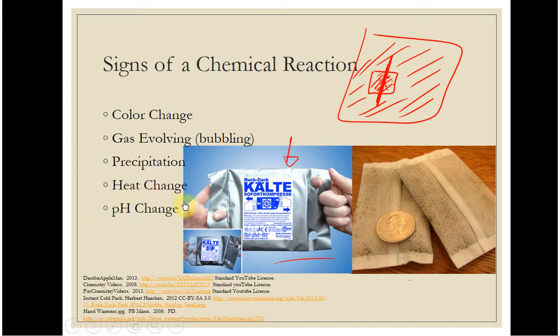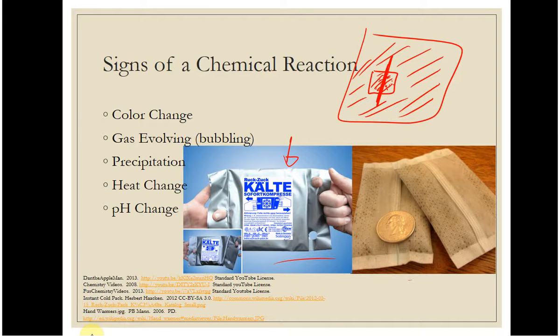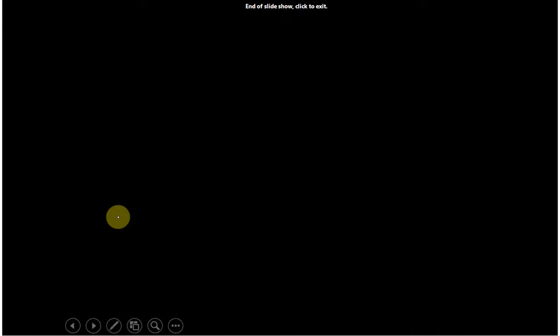The last thing is a change in pH. Now a change of pH just is when you have something that was very acidic and then it's not. Think about, you know, if you have acid reflux, you might take an antacid. That's going to react with the acid in your stomach to make it more neutral. And so we'll talk about this a little bit more in a bit. But those are the five signs of a chemical reaction.